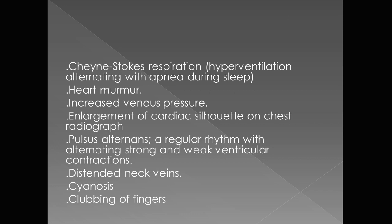There is increased venous pressure. Enlargement of the cardiac silhouette on chest radiograph — on both PA and lateral views — showing an increased outline of the heart, which is the cause of cardiomegaly. Pulsus alternans is a regular rhythm with alternating strong and weak ventricular contractions.